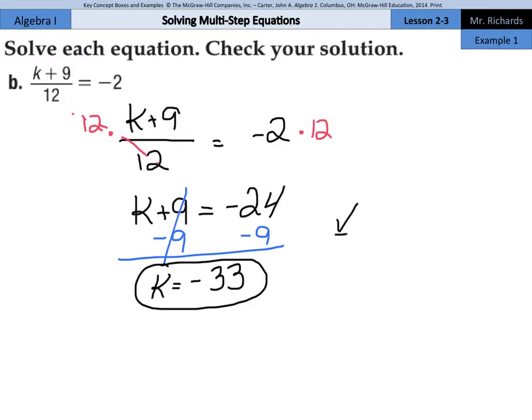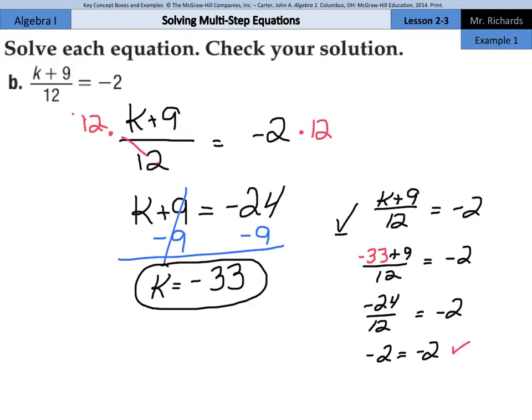When I substitute that back in for my check into the original, k plus 9 divided by 12 needing to equal negative 2. Negative 33 plus 9 is negative 24. Divided by 12 equals negative 2, so we're checked and good to go. K equals negative 33.